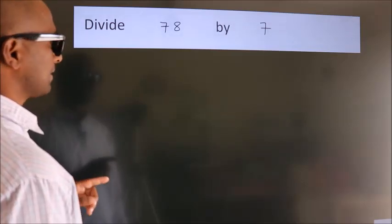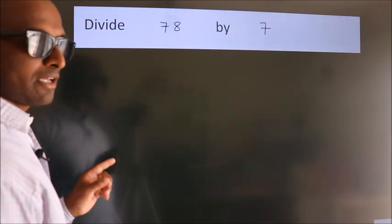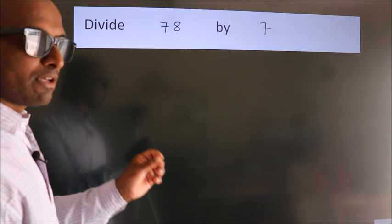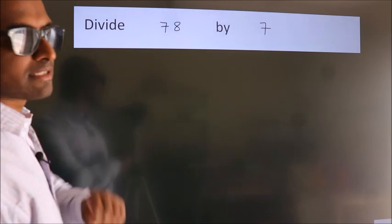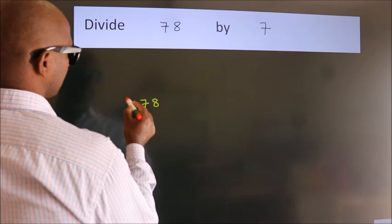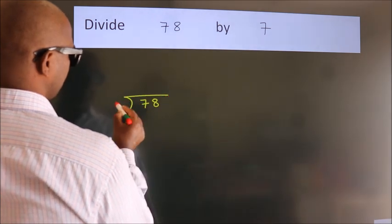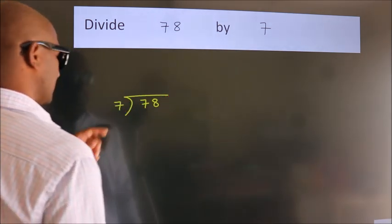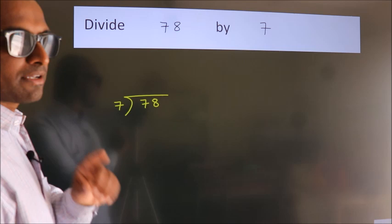Divide 78 by 7. To do this division, we should frame it in this way. 78 here, 7 here. This is your step 1.